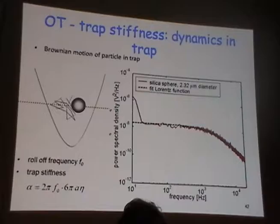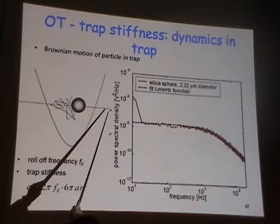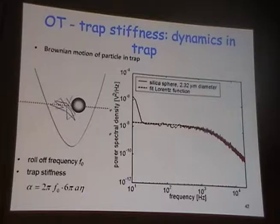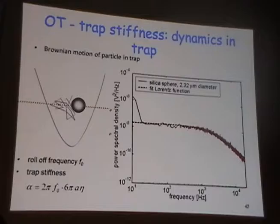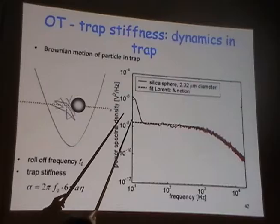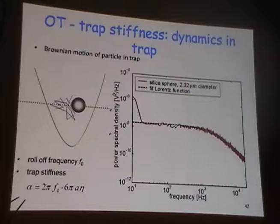We can plot x-squared versus time and get this very typical curve that describes the random motion of the particle. If we then plot the power spectral density as a function of frequency, we get this typical curve describing the power spectrum of the particle in the potential. The roll-off frequency seen at low frequency allows us to determine the trap stiffness, and I am fitting it to a Lorentzian function.